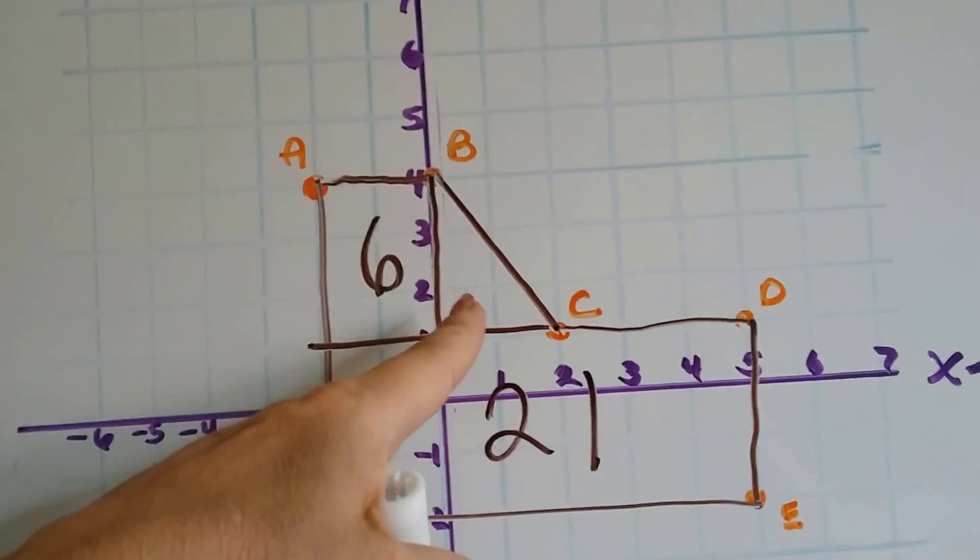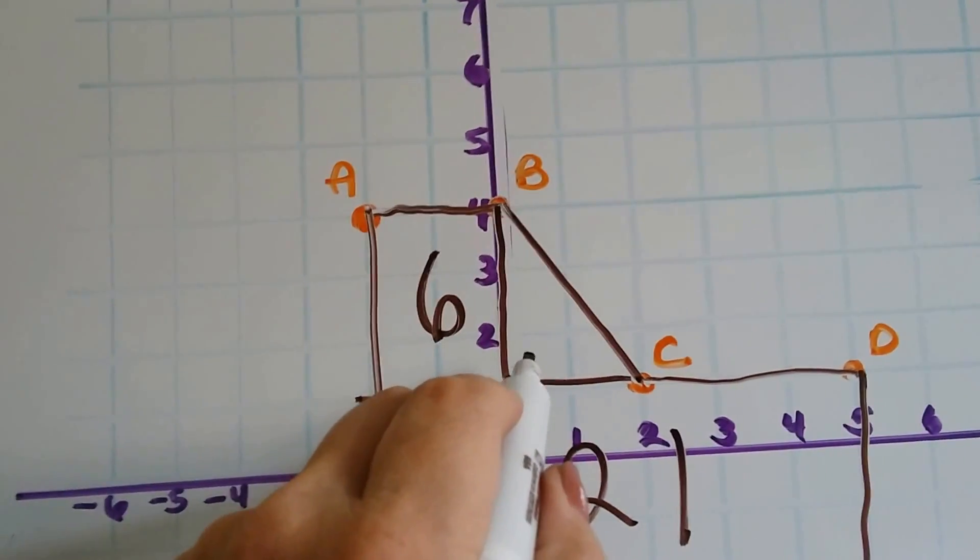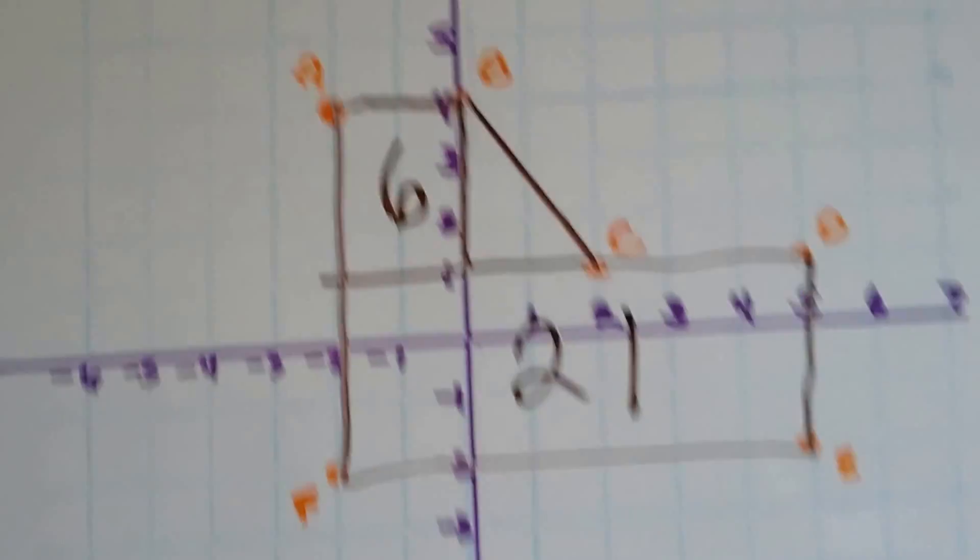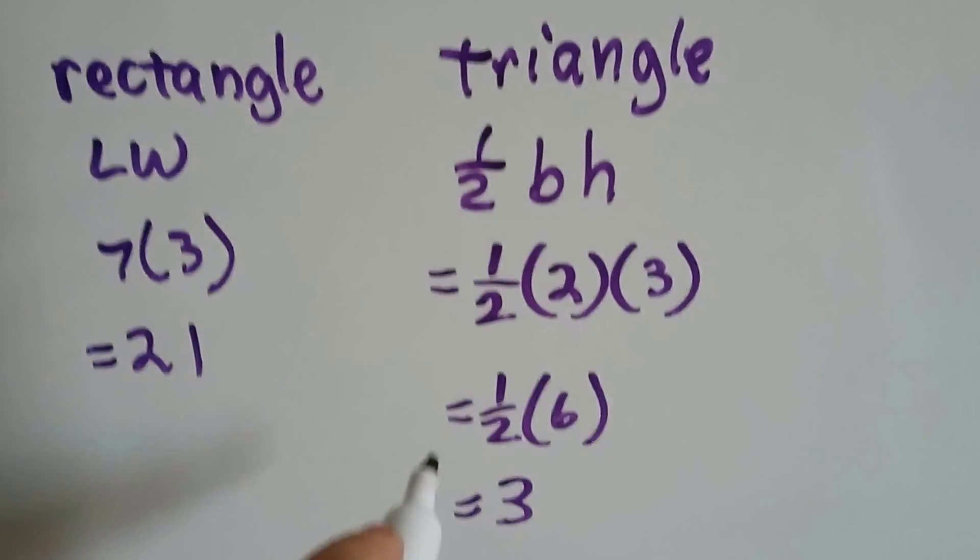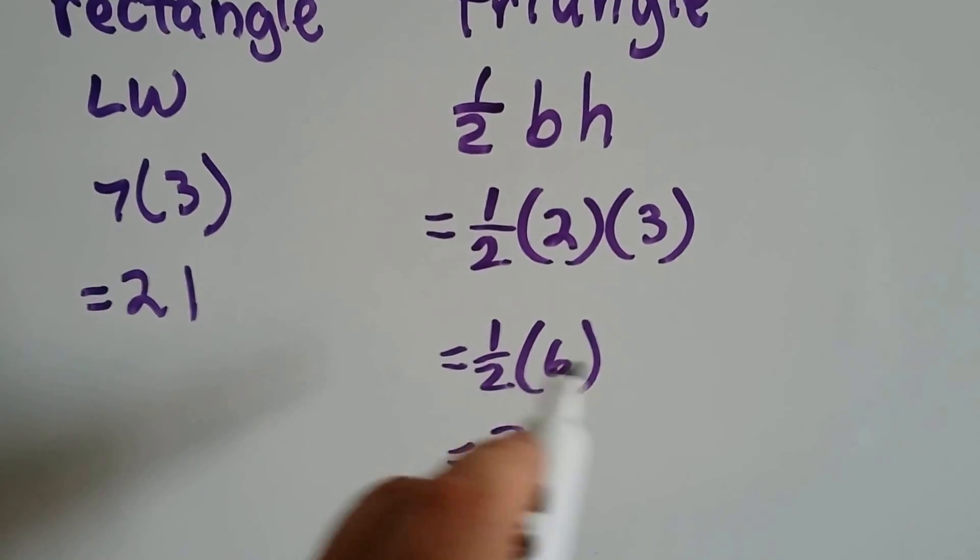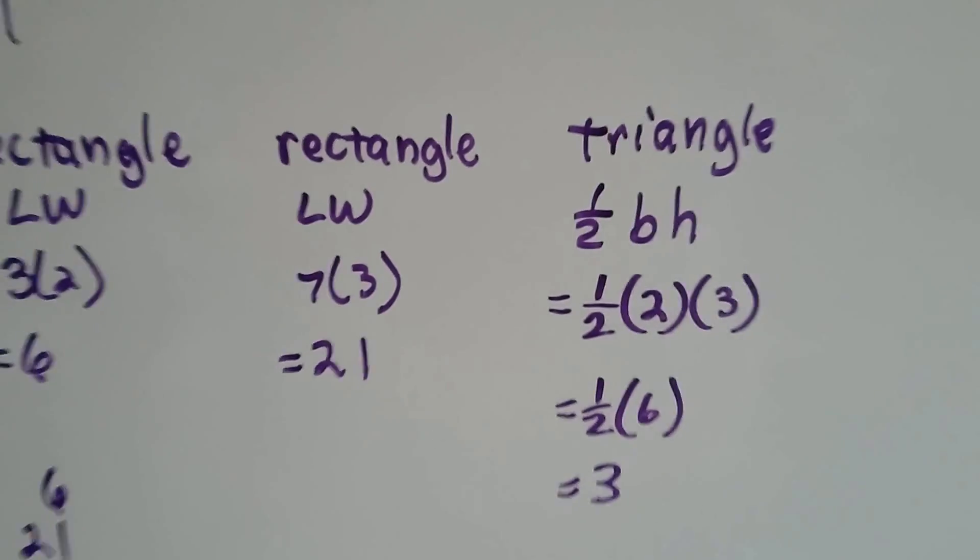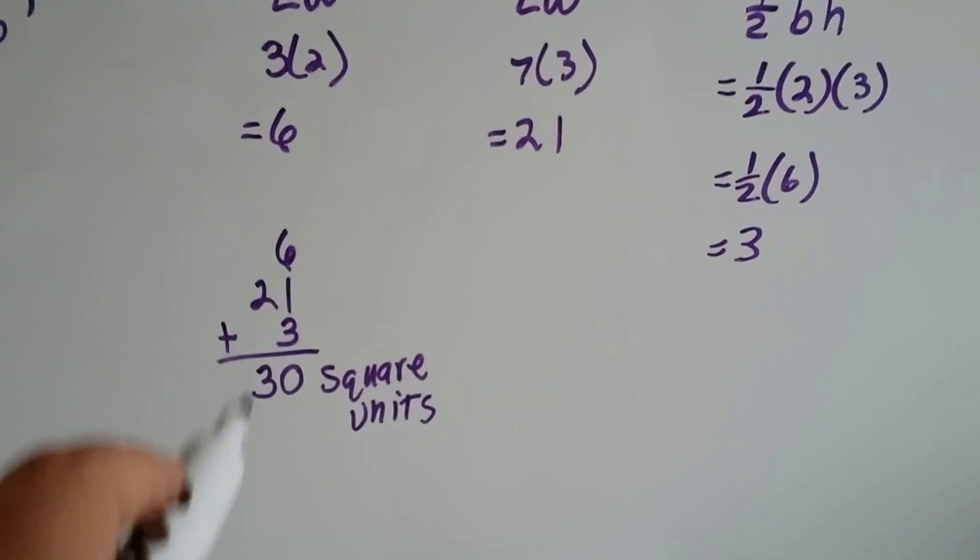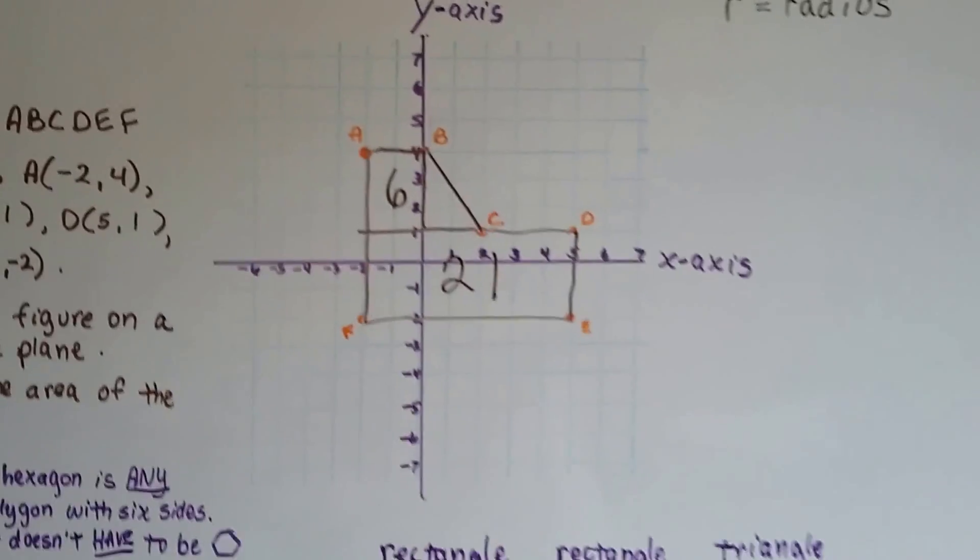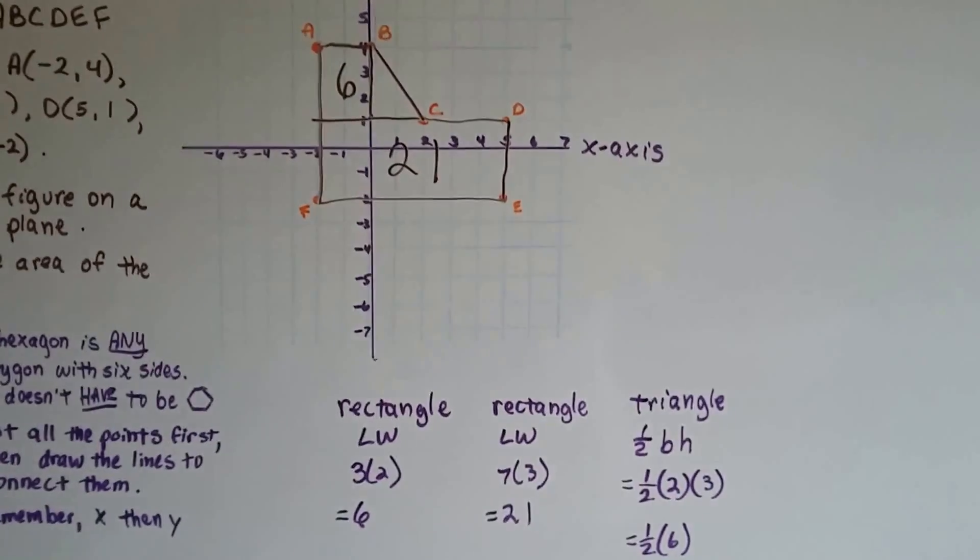And then, now I see this triangle. And triangle is half base height. So, we've got a base of 1, 2, and a height of 1, 2, 3. So, we've got half 2 times 3, or half 6. Half of 6 is 3. So, we've got 6, 21, and 3 for our areas. We add them up, and we get 30 square units. So, our weird hexagon is 30 weird units.